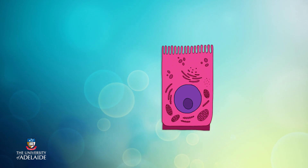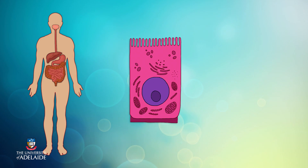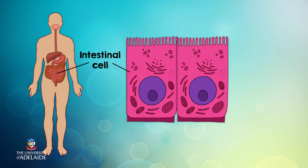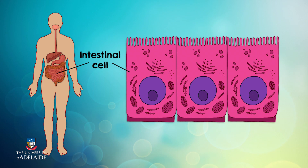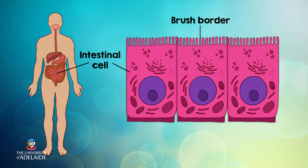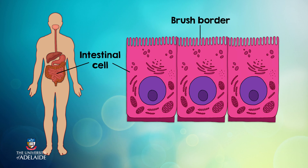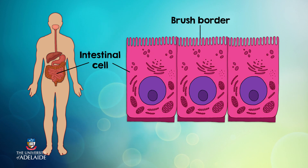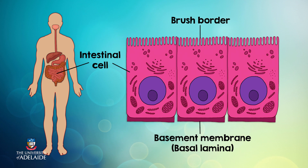This intestinal epithelial cell shows polarity. It has a brush border on its apical surface to increase the surface area available for absorption of nutrients, whilst its basal surface is flat.